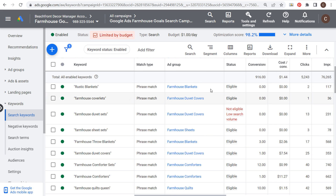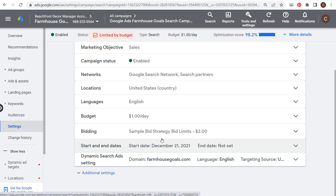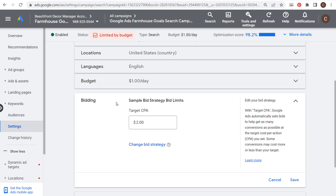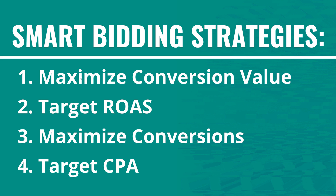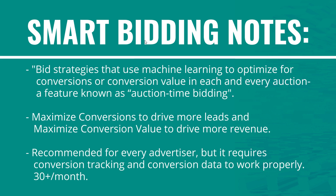Instead of setting bids at the keyword level, you're bidding on keywords and setting bids at the campaign level — or even the account level — and applying them to multiple campaigns. That's the point of portfolio bid strategies. So in campaign settings you use maximize conversions or maximize conversion value. These smart bidding strategies use machine learning to optimize for conversions or conversion value in each auction — a feature known as auction-time bidding.